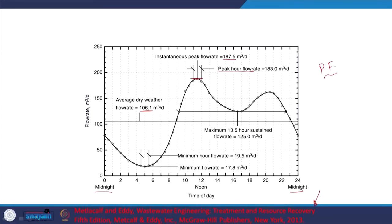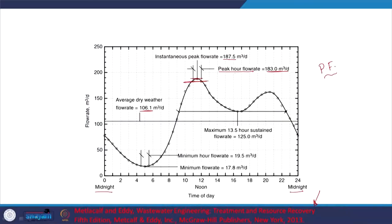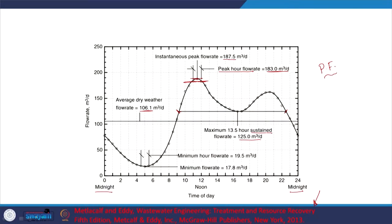The peak hour flow rate is 183 cubic meters per day. In developed countries, people typically look at the two-hour maximum; here we have the peak hour flow rate. That is the maximum flow rate sustained for a given period. For a 13.5-hour period, the sustained flow rate was 125 cubic meters per day. Obviously the peak flow rate is lesser when the time frame considered is greater. We also look at the absolute minimum flow rate and the minimum hourly flow rate.